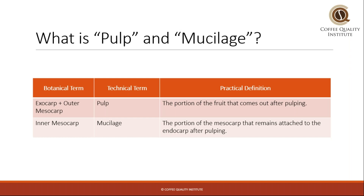There are other equipment like demucilagers that are supposed to take off all of the fruit, which includes the pulp and the mucilage, leaving a relatively clean parchment to be dried. So in those cases, the mucilage could be removed also. It sounds like inner and outer fruit to me, but it makes a lot of sense that when the coffee goes through a pulper, the pulp comes off.